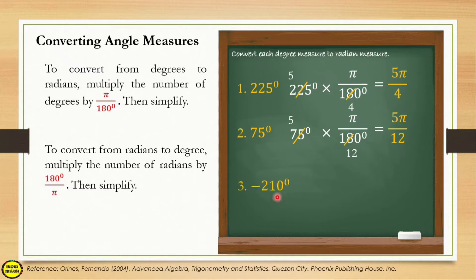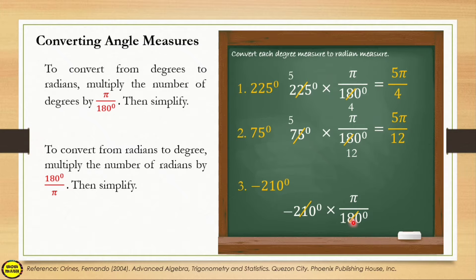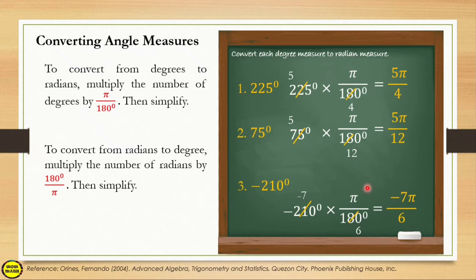Last example: negative 210 degrees. Multiply negative 210 degrees by π/180. The degree units cancel. The greatest common factor of 210 and 180 is 30. So negative 210 ÷ 30 = negative 7 and 180 ÷ 30 = 6. The answer is negative 7π/6.